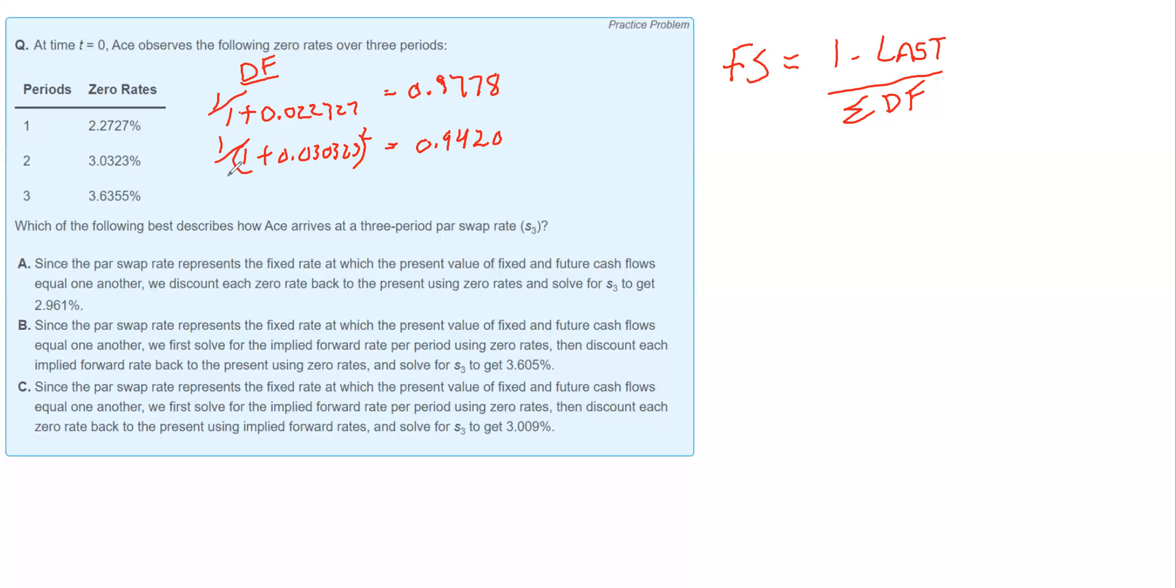And let's do the last one, one divided by one plus 0.03655. And all of this will be cubed because it's three periods from today. And we get a factor of 0.8984. Now we've got our discount factors.